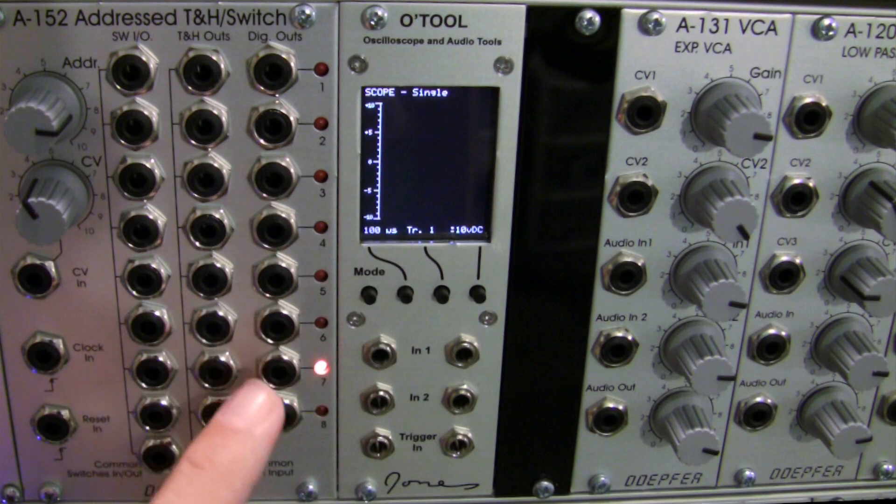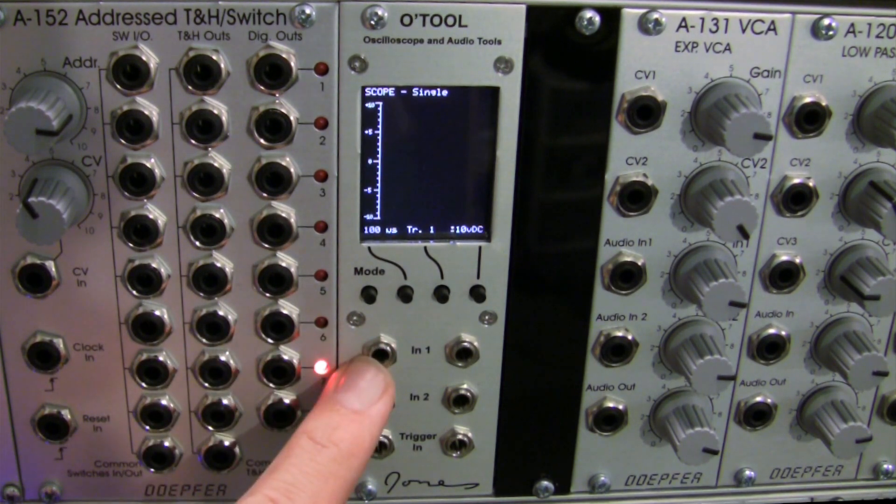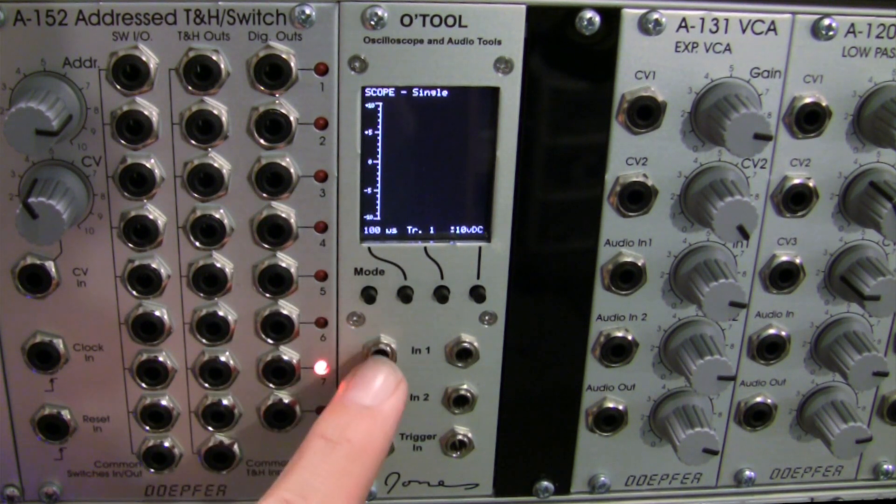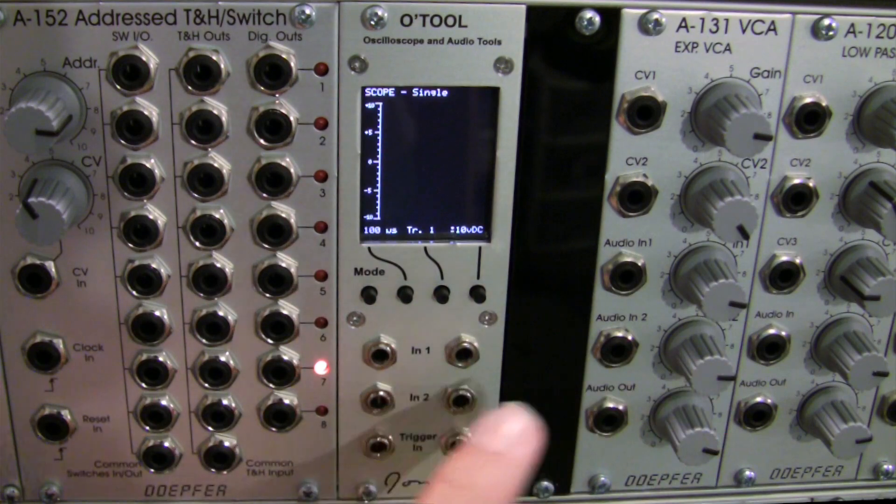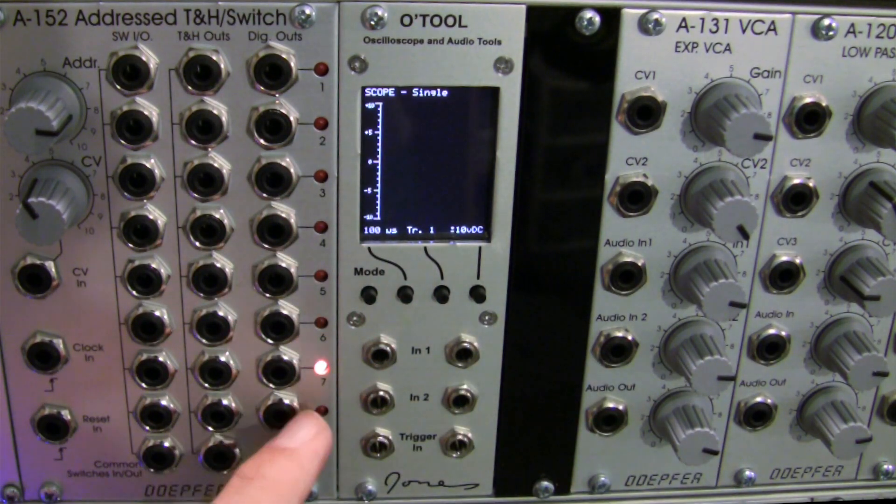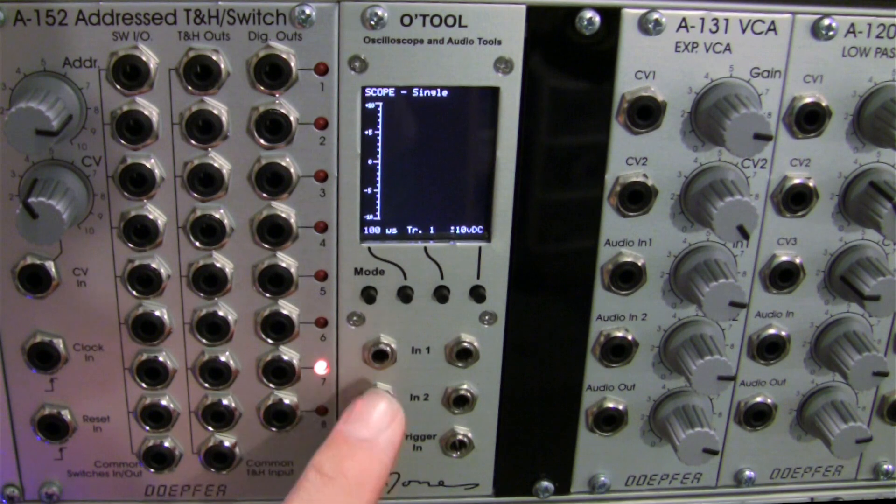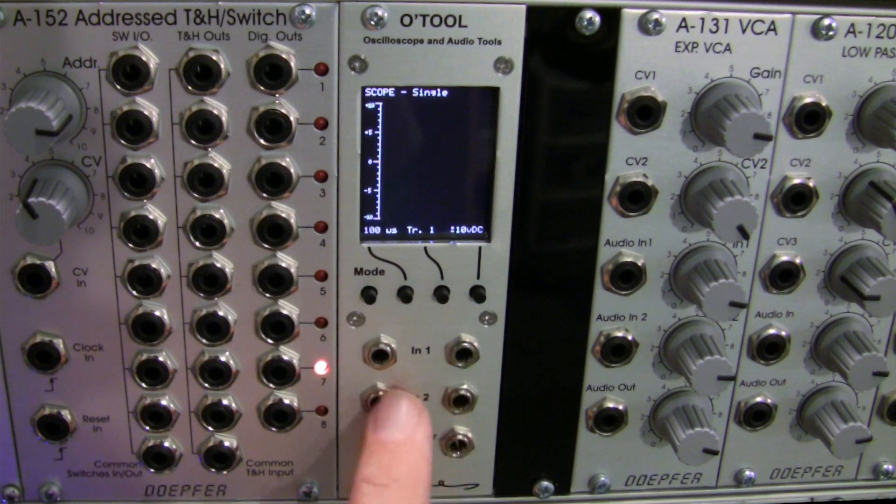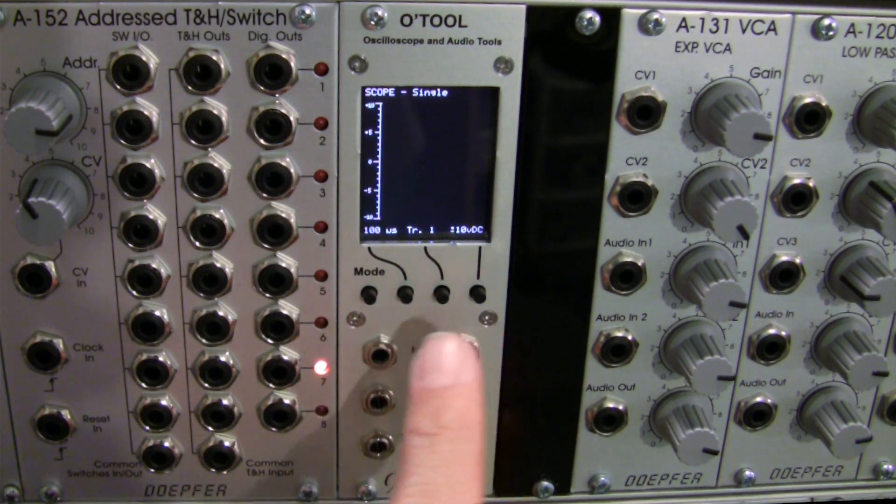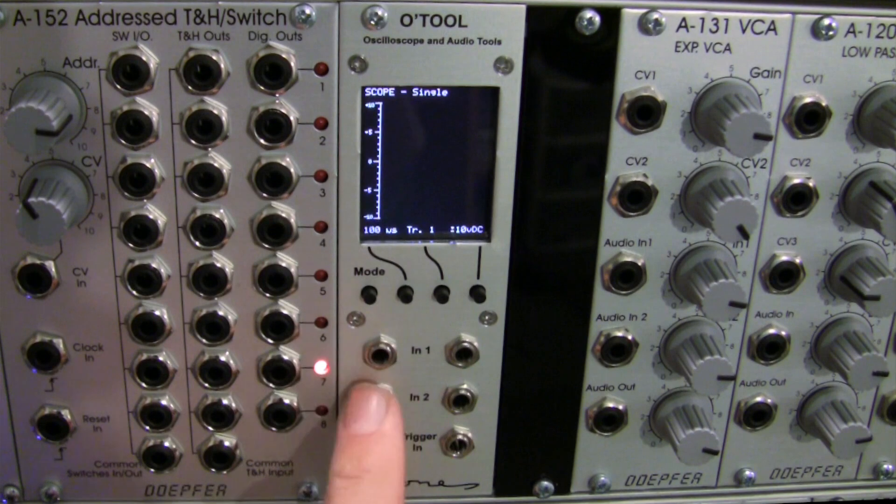The way they work is you can feed an audio signal or a sub audio signal into, let's say for example, input one, and then you can take that same signal and feed it out to a VCA or a mixer or a filter or anything like that. Input number two works identically to input number one. So basically these work as multiples. This is a multiple of this and this is a multiple of this.